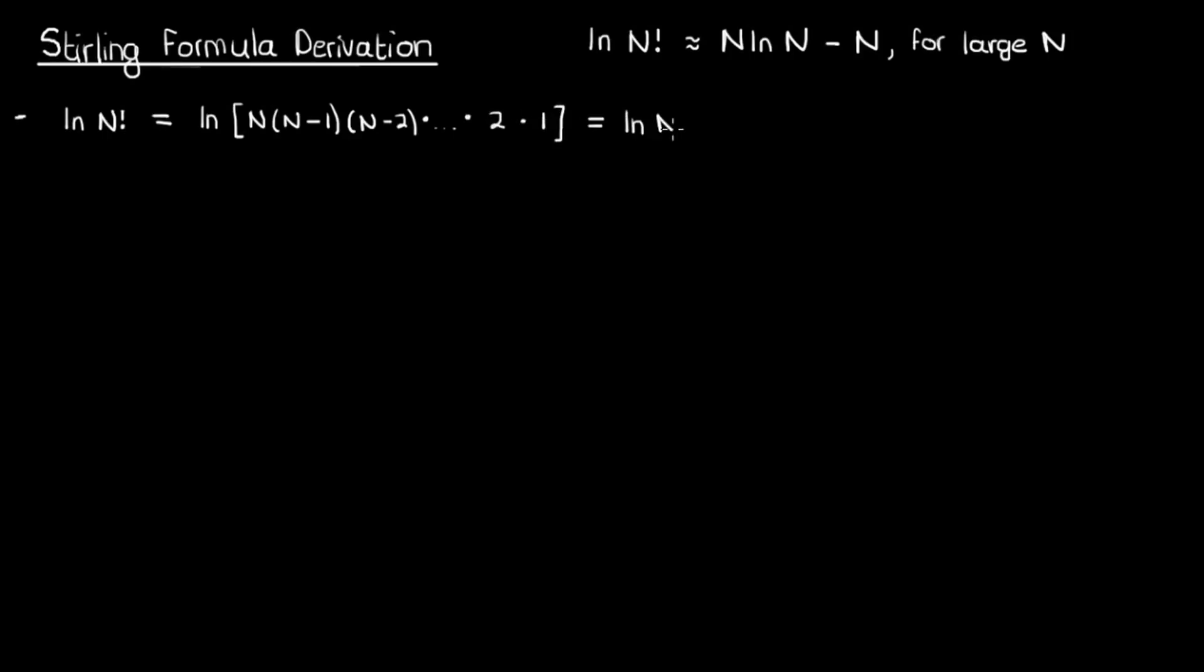Using the properties of natural logs we can split this up so we're adding a bunch of logs instead. This expression can be converted to a summation, specifically the sum from k equals 1 to capital N of ln(k), and I'm going to call this equation 1.